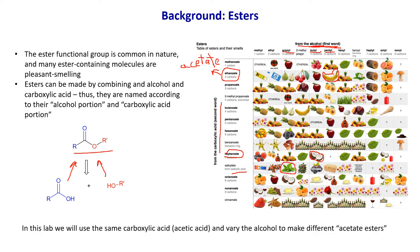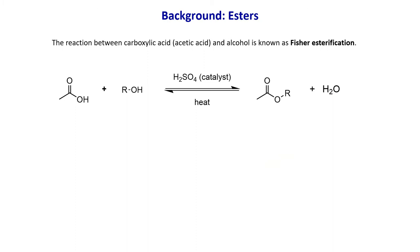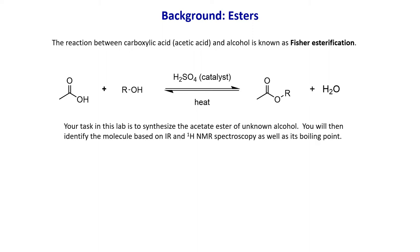In this experiment, we will take the same carboxylic acid and vary the type of alcohol to make different acetate esters. Different students will have different alcohols and you will smell different flavors, so pay attention in the lab. The reaction between acetic acid and alcohol in the presence of sulfuric acid as catalyst produces ester. We call this Fischer esterification. Your task in the lab is to synthesize the acetate ester of a known alcohol.